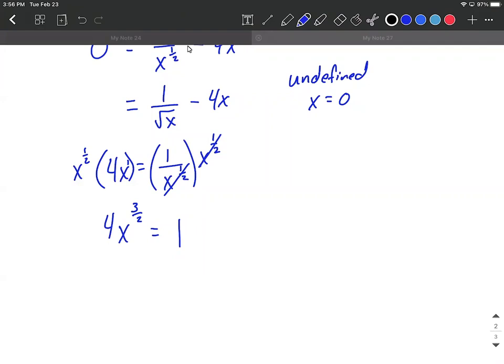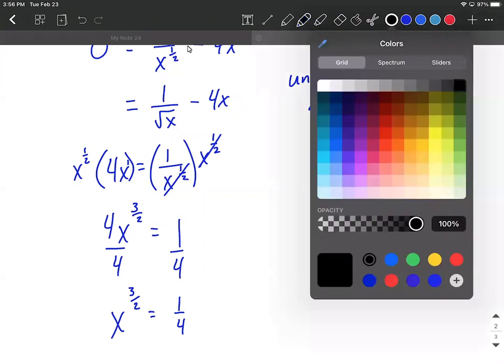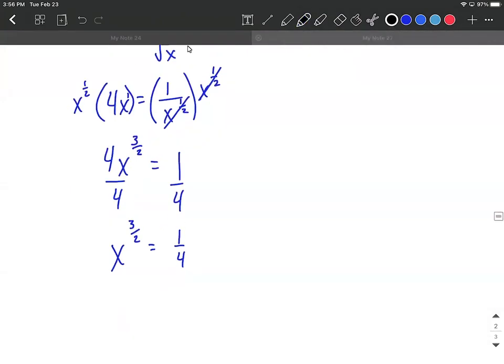From here we can make this into a power equation. If we divide both sides by four, that'll leave us with x to the three halves equals one fourth. And from here you can either raise both sides to the two thirds power, if you're comfortable using fractional exponents.